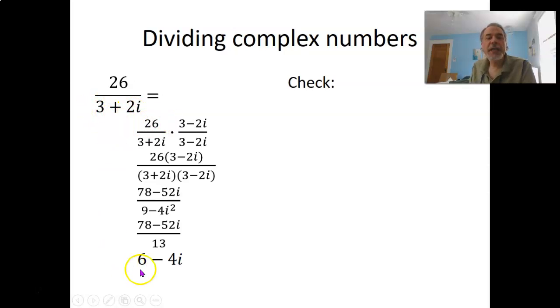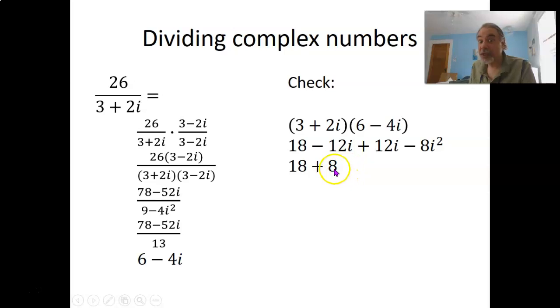Do I really take 3 plus 2i times 6 minus 4i to get back 26? Well, let's multiply that out and see. What do you get from 3 plus 2i times 6 minus 4i? First, you get 3 times 6 is 18. Outside, you get minus 12i. Inside, you get plus 12i. And last, you get minus 8i squared. The minus 12i plus 12i add up to 0. The i squared is negative 1. So here we've got minus a negative 8, which is the same as plus a positive 8. And then 18 plus 8 is equal to 26. It checks out.